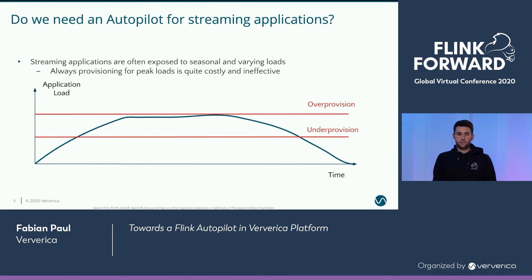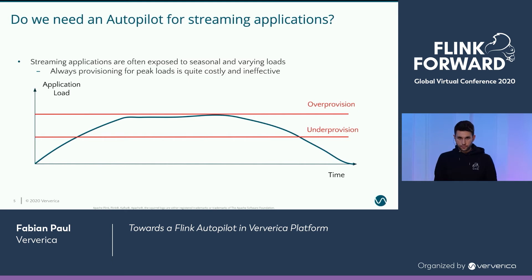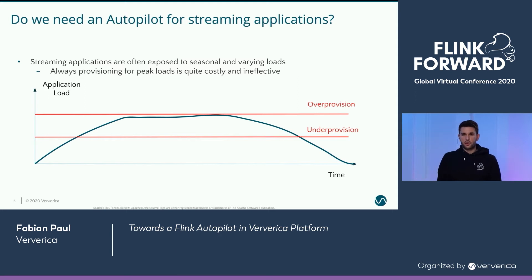Another problem we've seen for a lot of customers is what happens when your application is exposed to seasonal changes and varying loads. I have this example which shows a curve over time showing the load — your product is running over the globe and it may be that some regions or customers have a bigger impact than others, and this results over a day in this kind of graph.